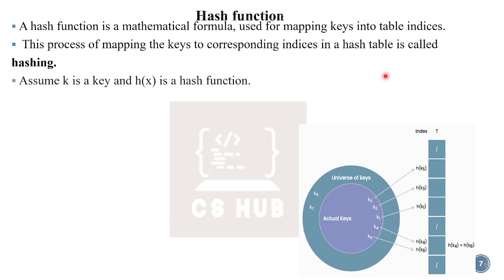Assume k is the key and h(x) is the hash function. From the universe of keys, we select actual keys — K1, K2, etc. Applying the hash function h(k) gives a location index. For example, h(k1) maps to a specific location in the hash table. Each element linked with key k is stored at index h(k).